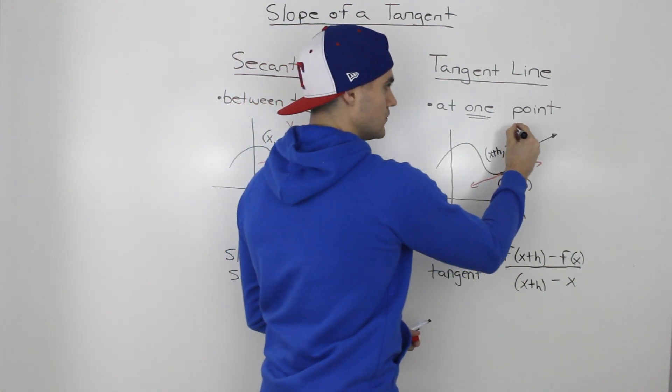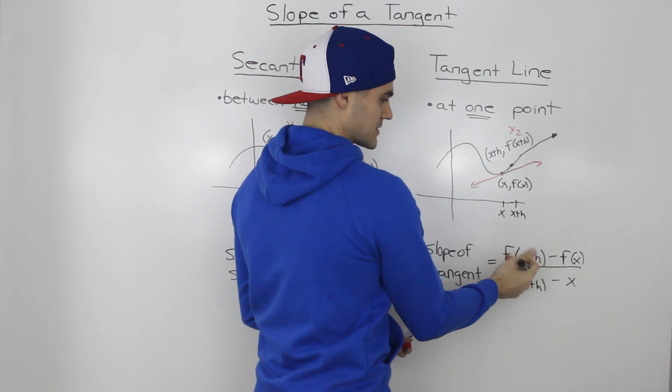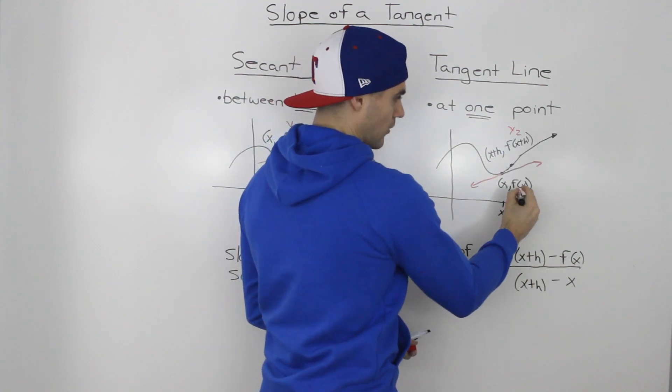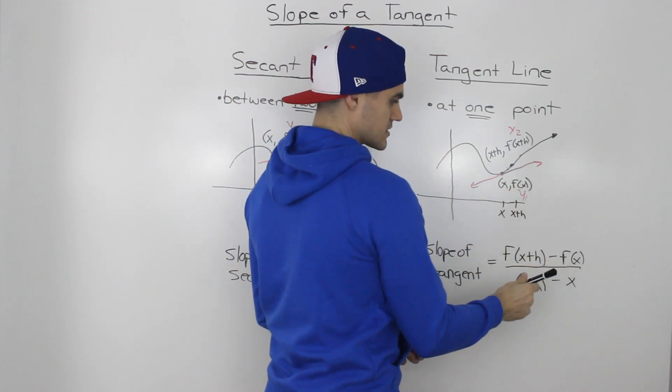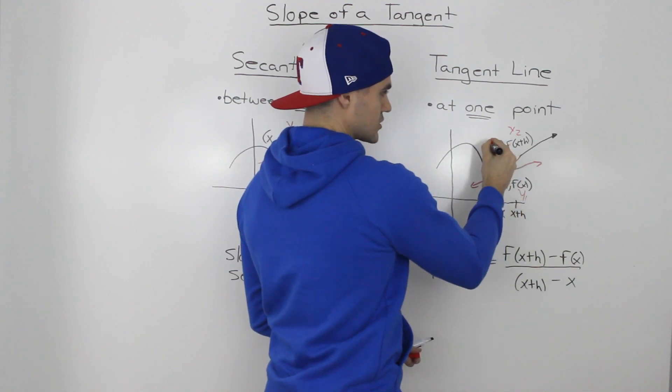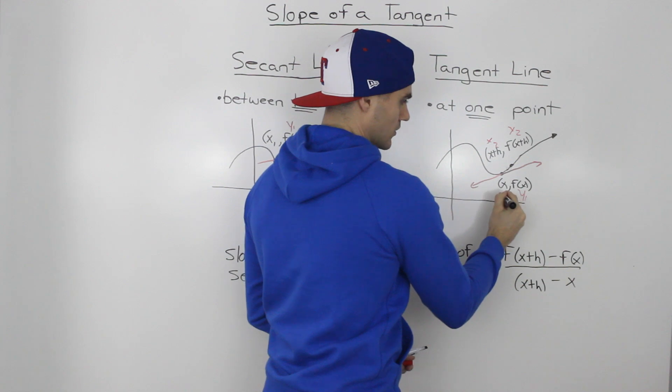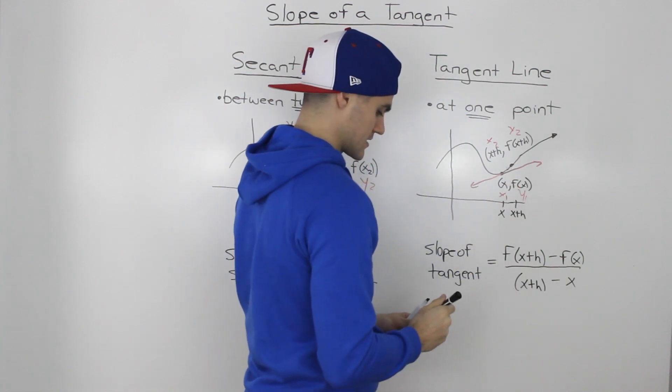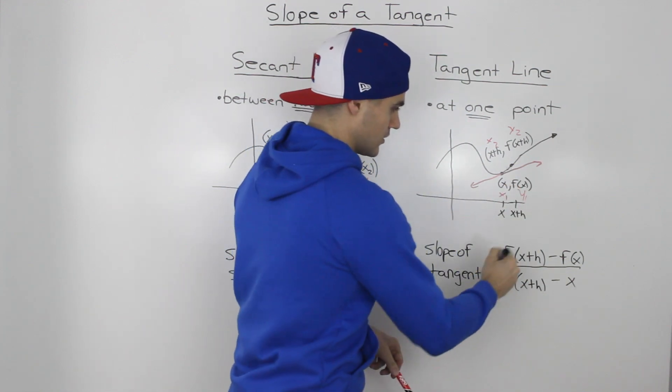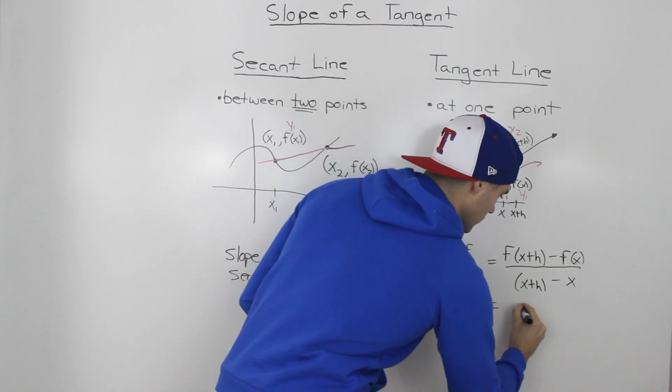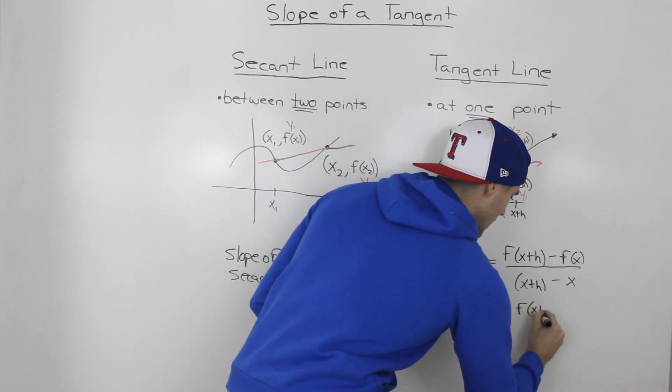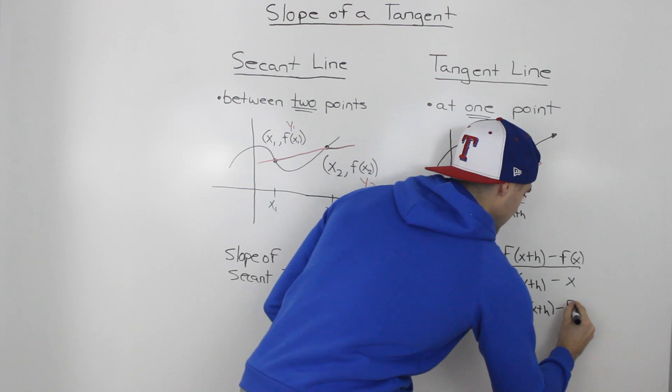So the y2 is this f of x plus h minus y1, which is just this f of x, all over x2, which is represented by this x plus h, minus x1, which is represented just by that x. And then here, notice how the numerator we can't simplify anymore, so that would be f of x plus h minus f of x.